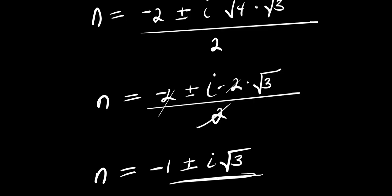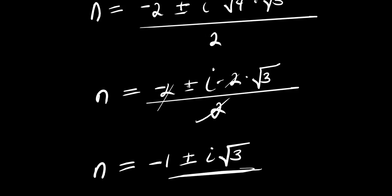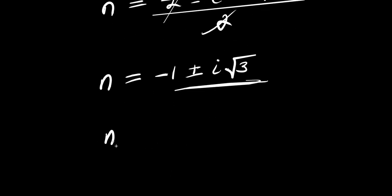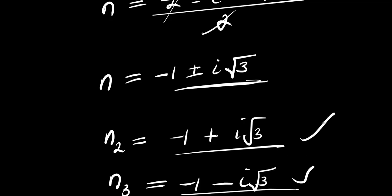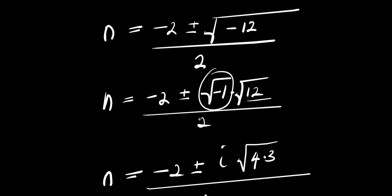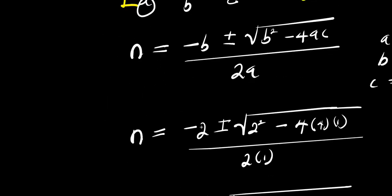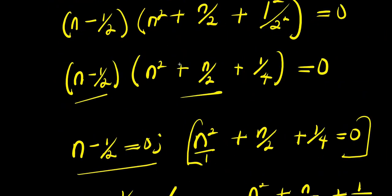We have two complex values for n: n₂ equals negative 1 plus i root 3, and n₃ equals negative 1 minus i root 3. Together with the real solution, those are all three solutions.